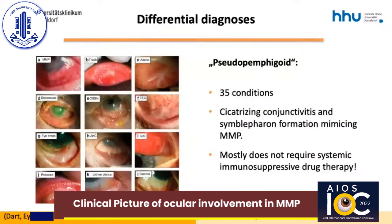There are several systemic or ocular surface diseases that can mimic MMP and cannot be distinguished from true MMP with ocular involvement. In the 2016 Bowman lecture on scarring conjunctivitis, Professor Dart summarized 35 conditions that might cause cicatrizing conjunctivitis. The most common one is drug-induced scarring. As most of the other diseases causing a similar clinic do not require systemic immunosuppressive drug therapy, it is very important to distinguish MMP from any other diagnosis.